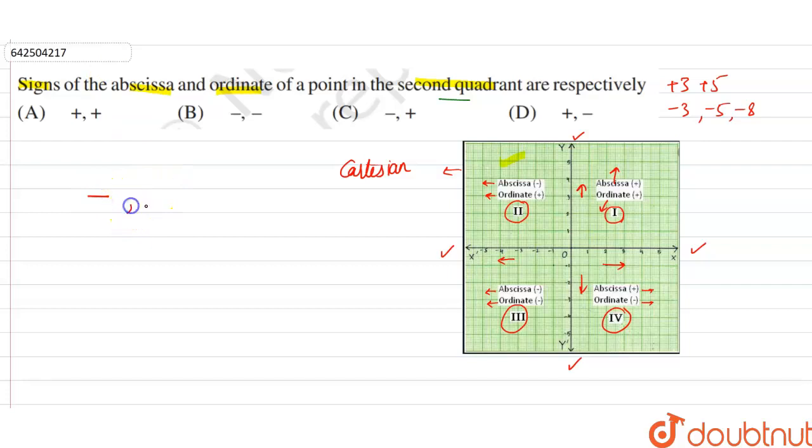This is the second quadrant and in second quadrant, abscissa is negative and ordinate is positive. So, we can say negative positive. So, we can say that the correct option is option C.